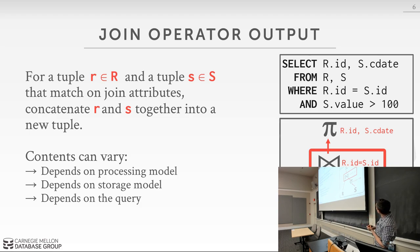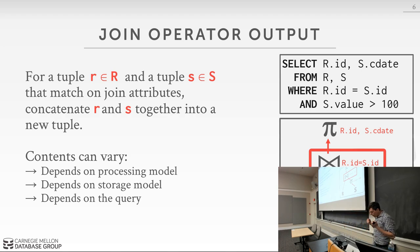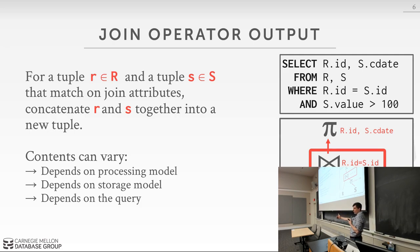Before we get into the actual algorithms, let's talk about what join operators produce as output and how we determine whether one algorithm is better than another. Say we have this sample query doing an inner equi-join on R and S on rid equals sid. A join operator in our query plan produces some output and passes it up to the projection operator above it.